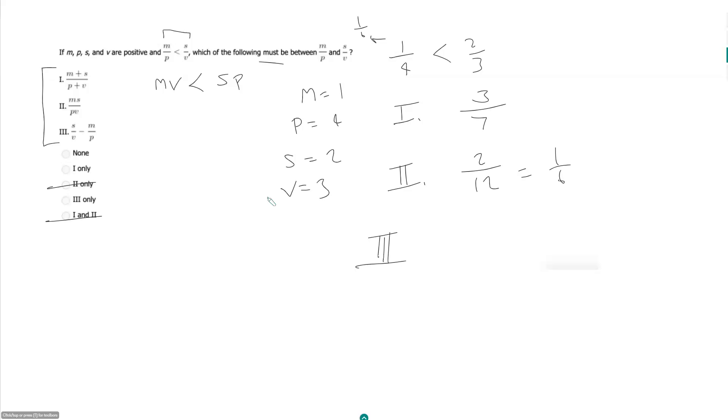What about this third statement? s over v minus m over p. So in our case that would be 2 thirds minus 1 fourth. So if I find a common denominator, that would be 8 over 12 minus 3 over 12. That would be equal to 5 over 12. So 5 twelfths is between 1 fourth and 2 thirds. So I can't really do anything here either.